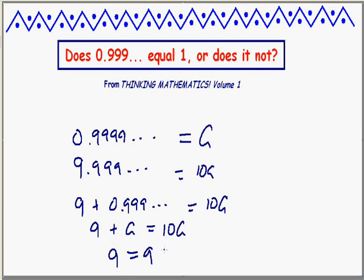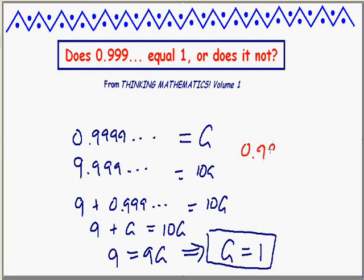Ah, subtract Georges from both sides. Nine must be nine Georges. And look at that. The math is telling me Georges must be one. It seems that I've got an ironclad argument now that 0.9999..., here it is, 0.9999... has to be one.